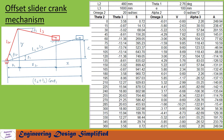Now that we have derived all necessary equations, let us solve a problem. In this problem: crank length l2 = 480 mm, coupler length l3 = 1600 mm, angular velocity of crank omega2 = 20 rad/s, offset e = 100 mm, and angular acceleration of crank alpha2 = 0. From this geometry we can find theta1 = 2.76 degrees.